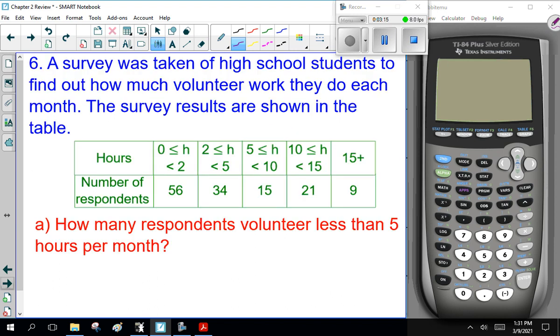Anyway, last question. Woo-hoo! Let's go. A survey was taken of high school students to find out how much volunteer work they do each month. The survey results are shown in the table. Hours, number of respondents. How many respondents volunteer less than 5 hours per month?